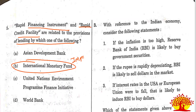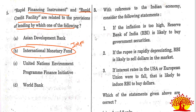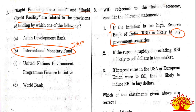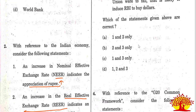Third question with reference to Indian economy: Statement 1 - if inflation is too high, RBI is likely to buy government securities. Statement 2 - if the rupee is rapidly depreciating, RBI is likely to sell dollars in the market. Statement 3 - if interest rates in the USA or EU fall, that is likely to induce RBI to buy dollars. Statement 1 is wrong because RBI should sell government securities to suck out liquidity when inflation is high. Eliminating statement 1, the answer is Option B, statements 2 and 3.